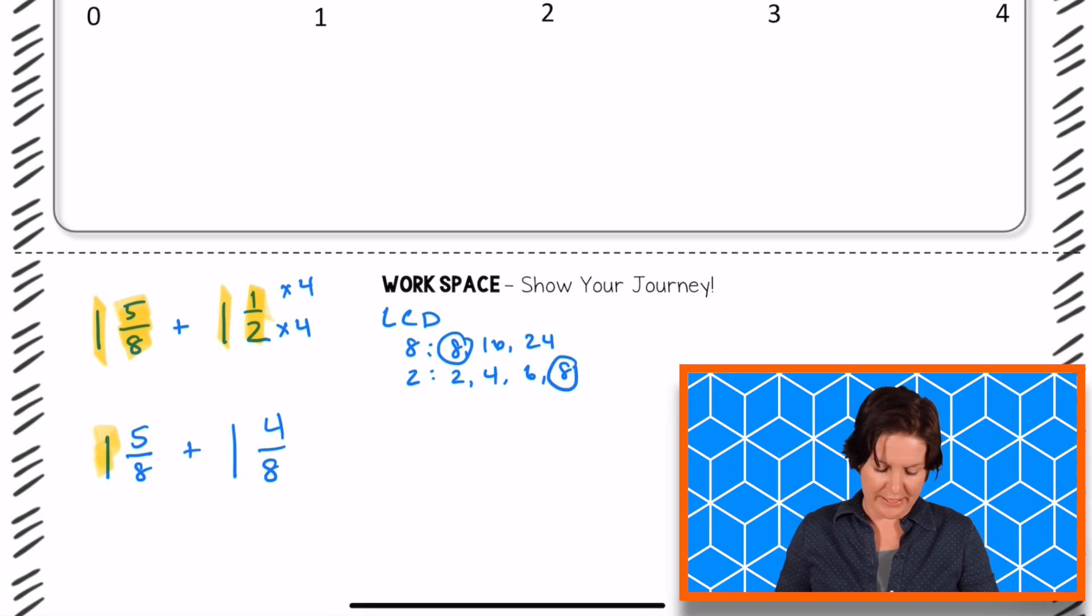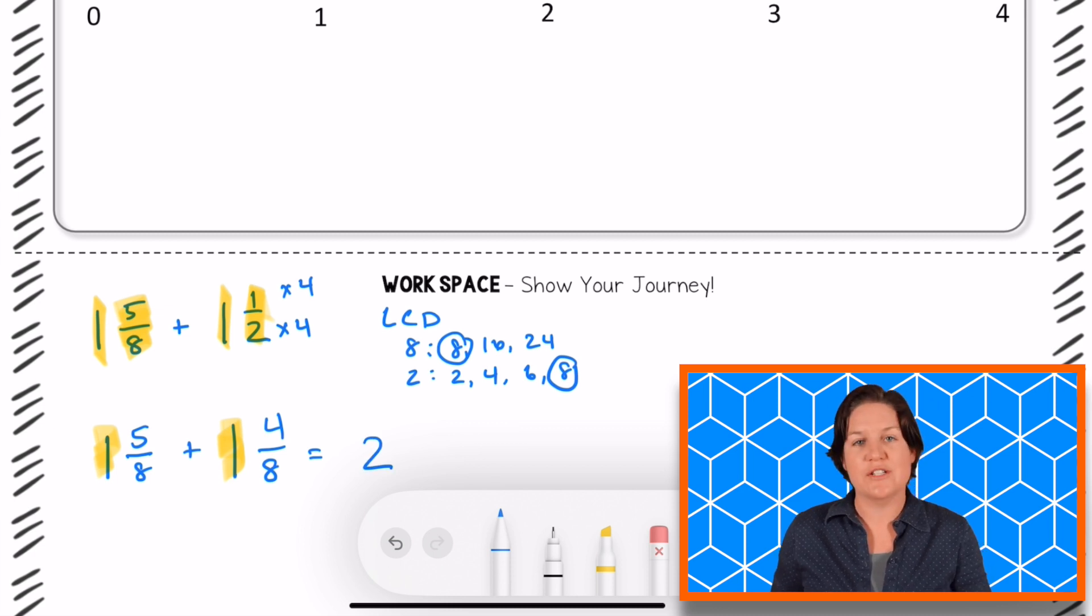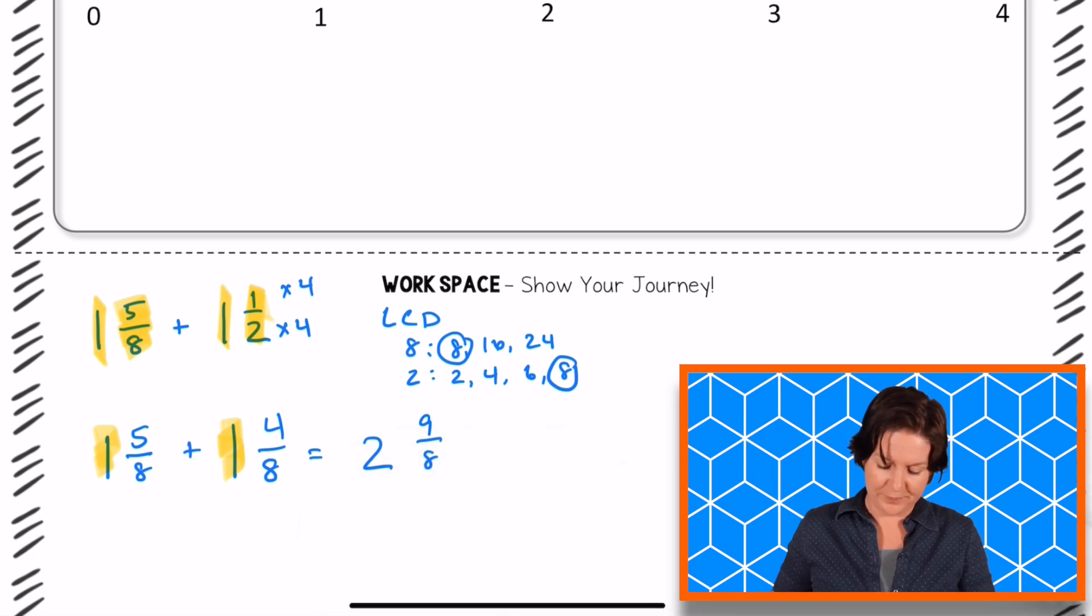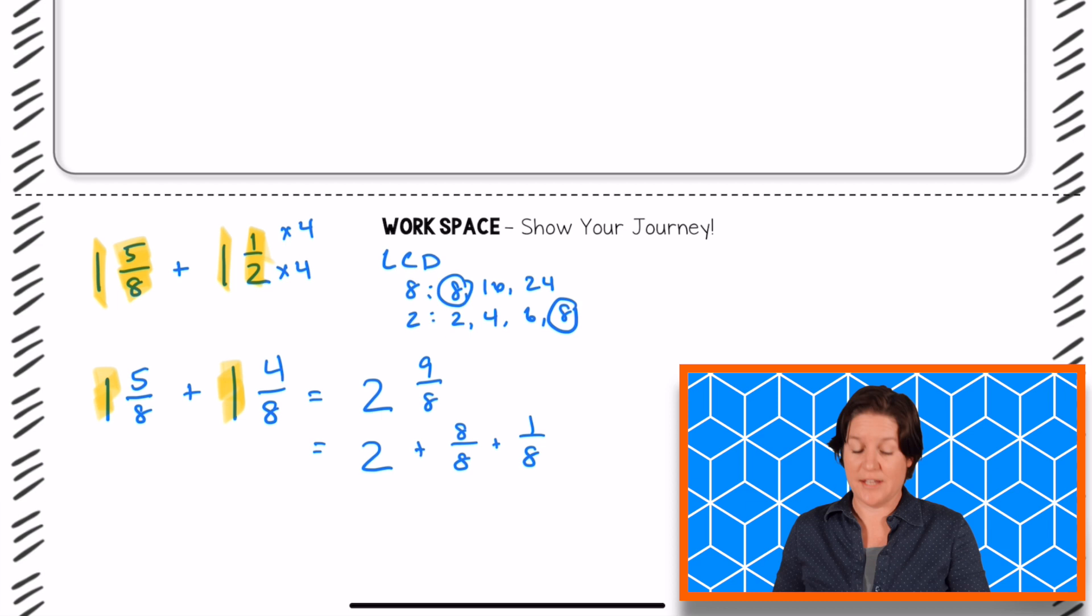Okay, so now I can add these two whole numbers. That would equal two wholes. And when I add the fractions, five eighths and four eighths, I get nine eighths, which looks funny. So let me decompose. Nine eighths into eight eighths plus one eighth. Eight eighths is the same as one whole.